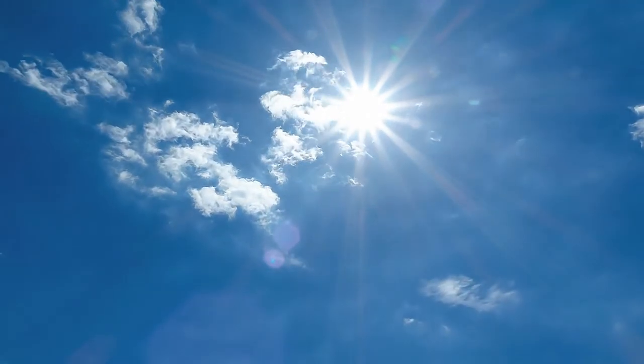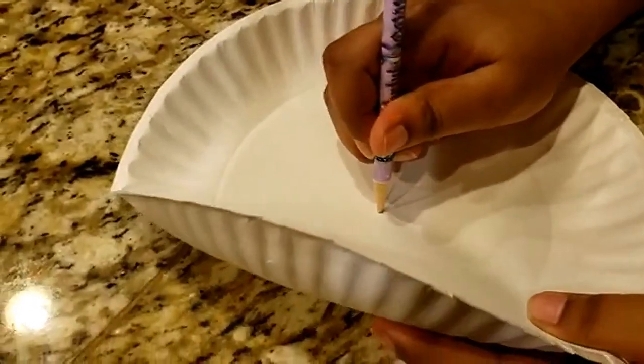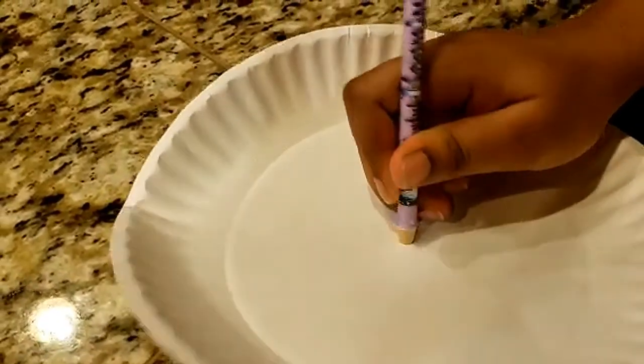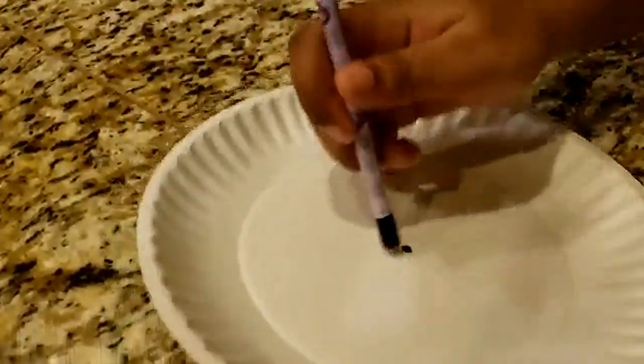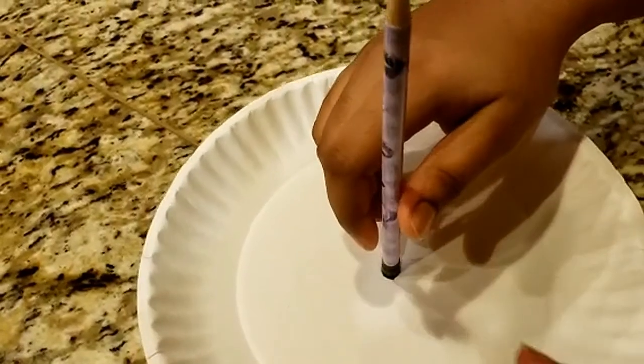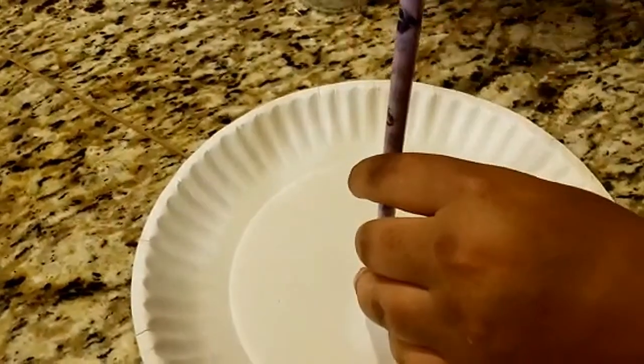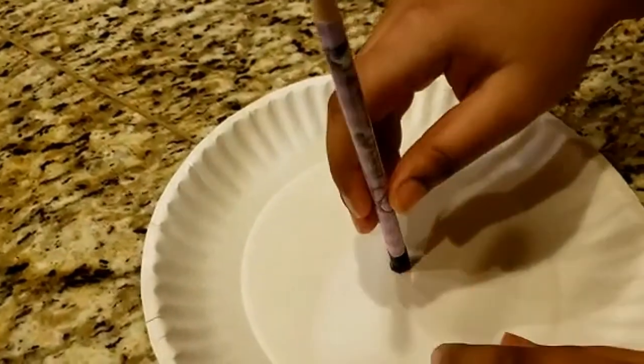Start off by first poking a hole through the center of the paper plate like this, using the sharp end of the pencil. Then stick the pencil through and tape it down so that it is secure.